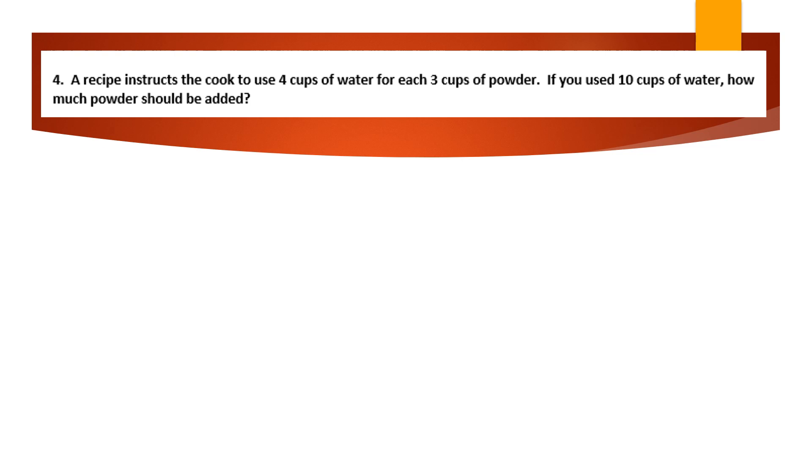Recipe instructs the cook to use 4 cups of water for every 3 cups of powder. If you use 10 cups of water, how much powder should be added? Again, it's cups to powder, water to powder. It's whatever the ratio that they're giving you is. You set that up, substitute whatever you can and cross multiply.